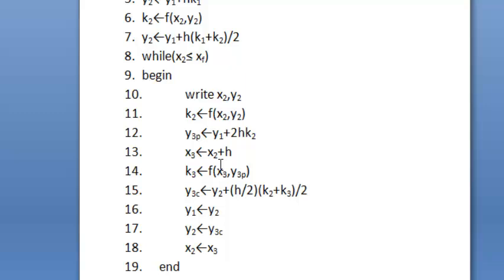Then we increment x2 by h and put it in x3. Here k3 becomes the value of the function at point x3 comma y3p. Here the corrected value of y3, that is y3c, comes by y2 plus h by 2 into k2 plus k3 divided by 2.